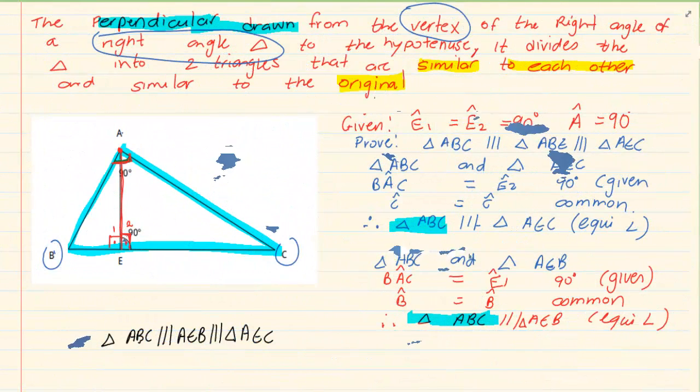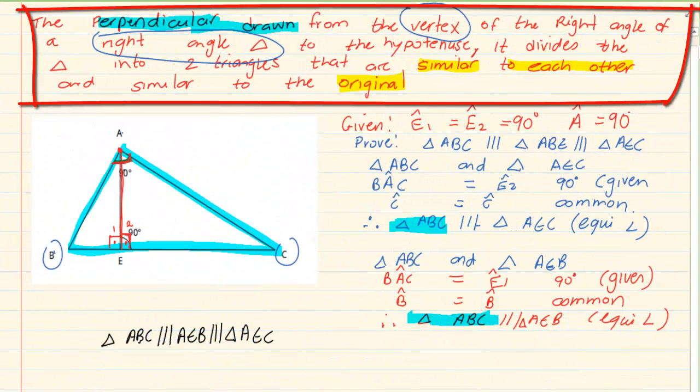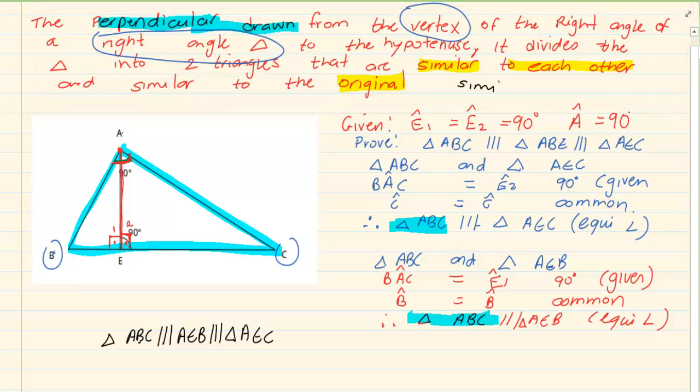Now in this proof, we had used 90 degree triangles and we had proven that they are similar. So this rule is usually called similar 90 degree triangles.